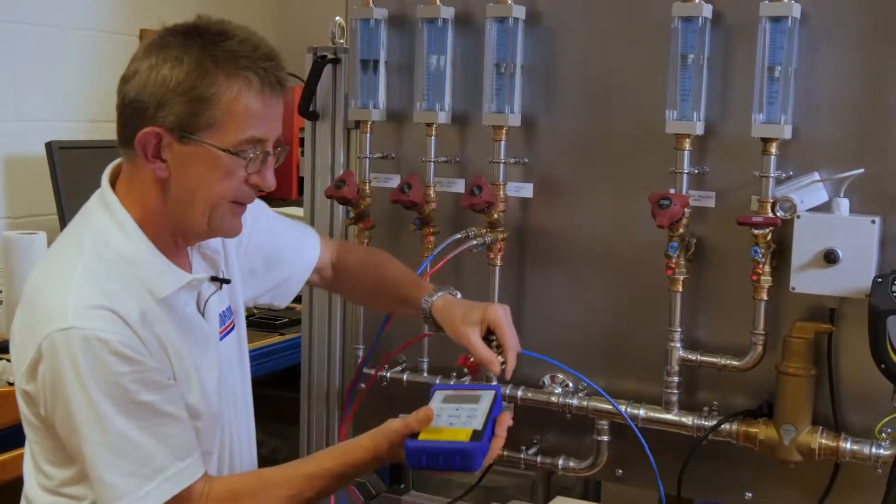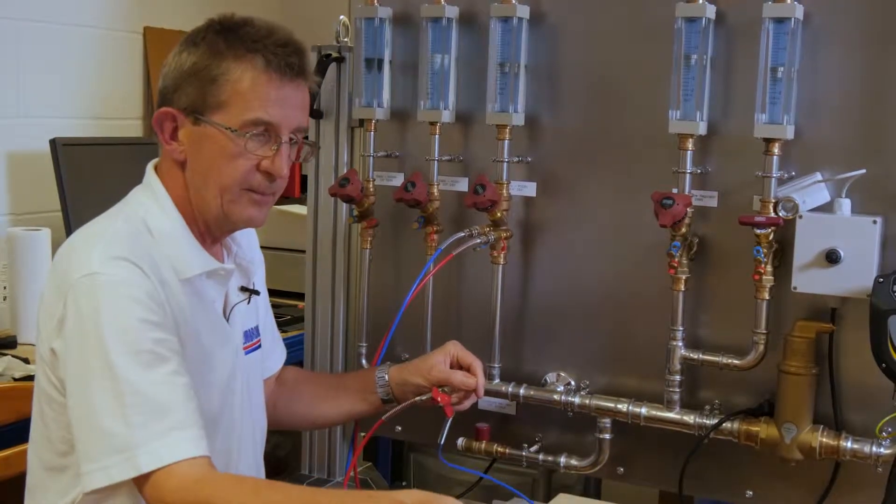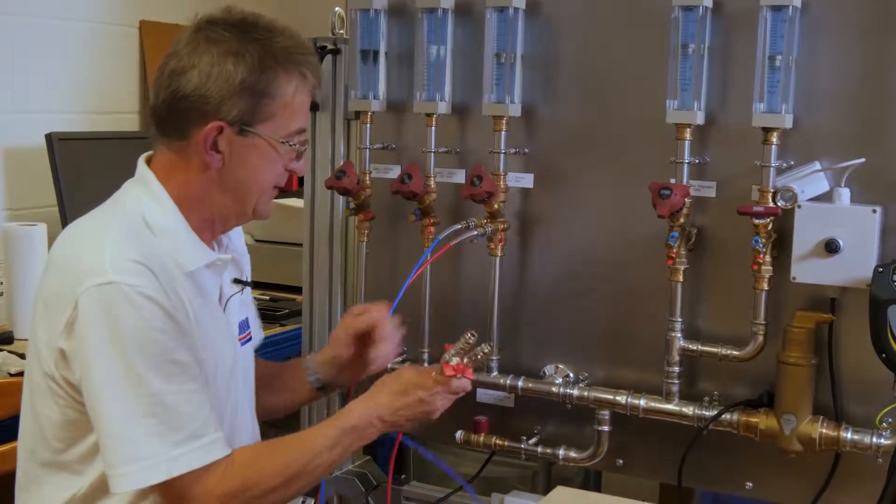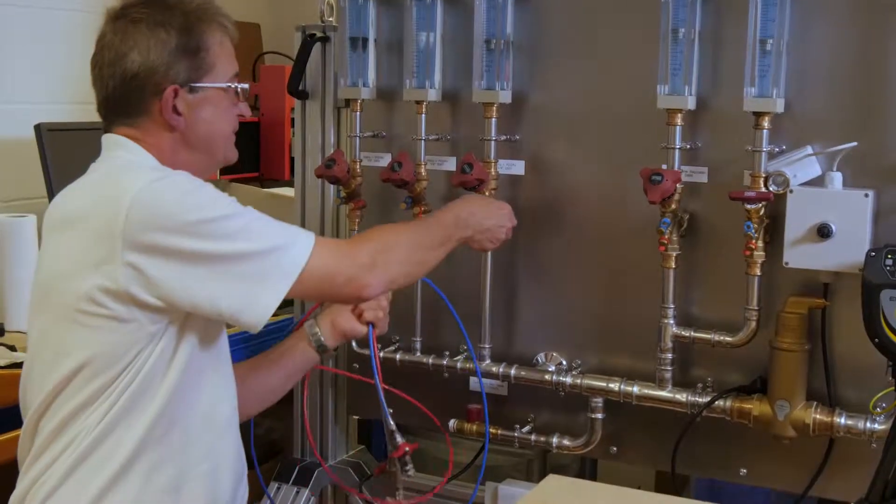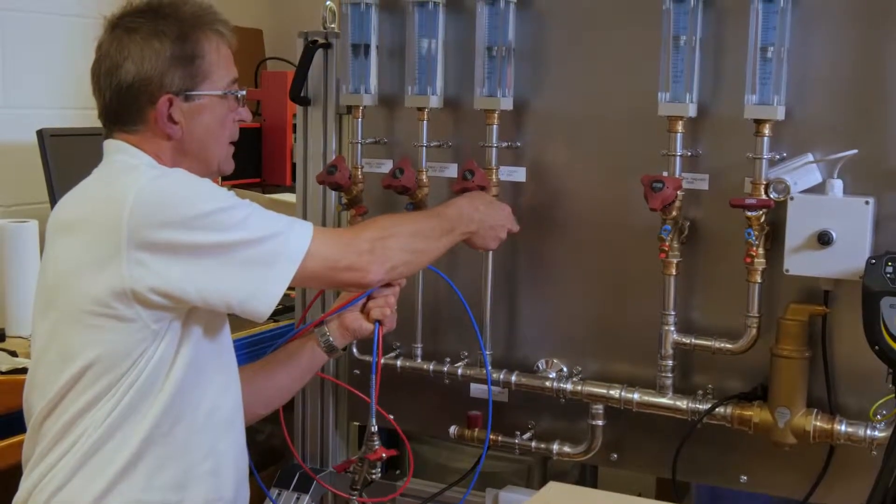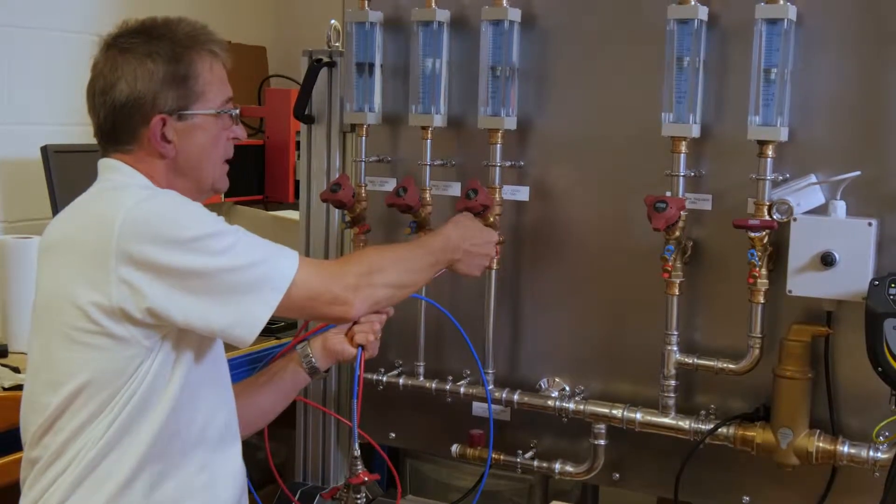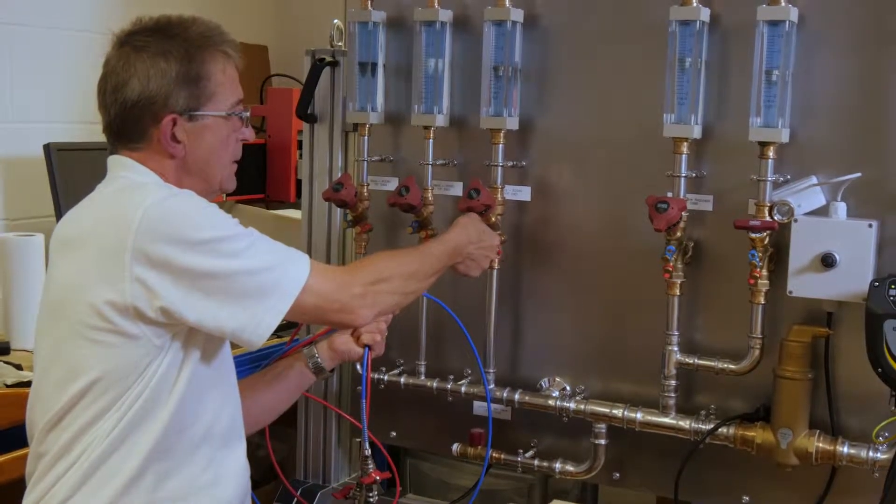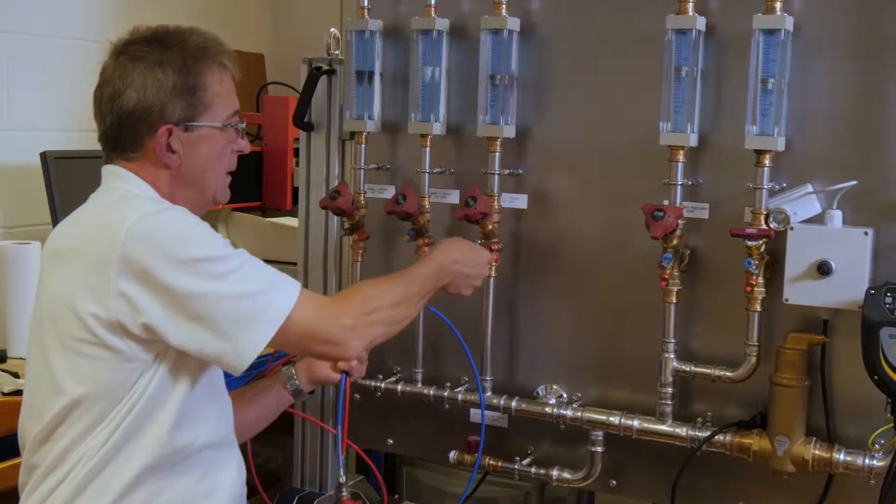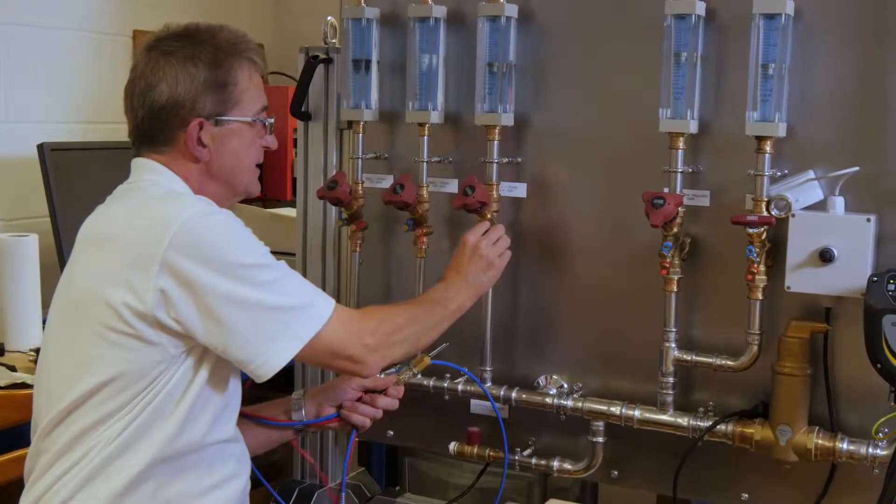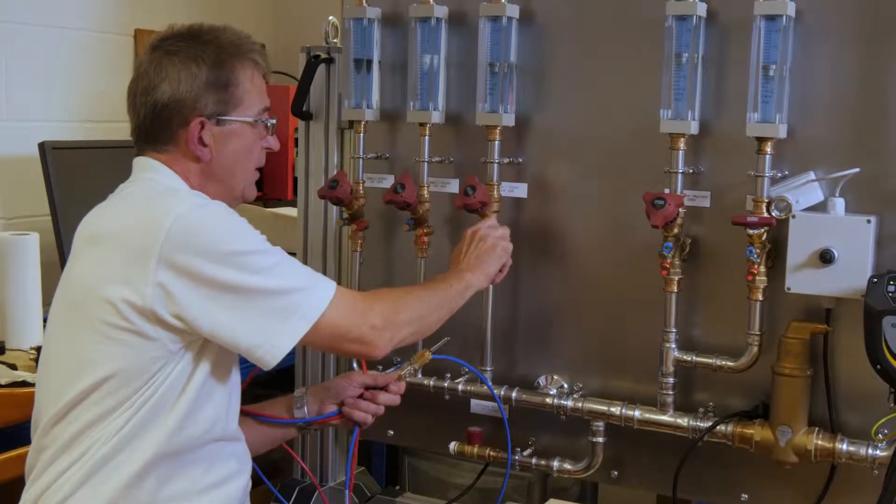Little dribble there. Little dribble there. Little dribble there. And we can now disconnect the hoses from the system. And then refit the sealing caps onto the valve.